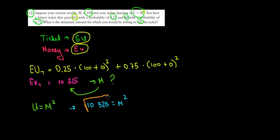so if we take the square root of this one and the square root of this one, we would find that the money that we need to have this expected happiness is going to be equal to $102.59.